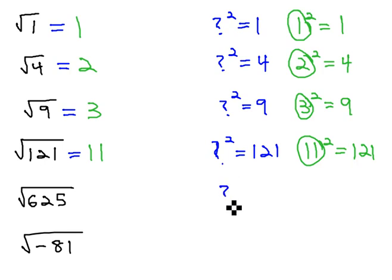As the numbers get bigger, like 625, it might take a little bit of guess and check to figure out what number squared is 625. We knew 11 gave us 121, so maybe we'll try 13. 13 squared is 169. That's much too small. How about 15 squared?